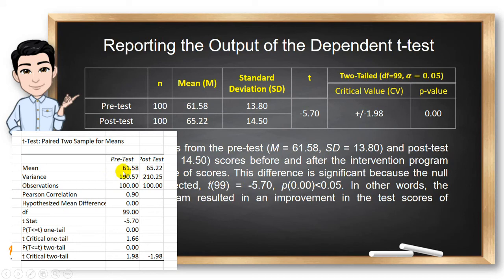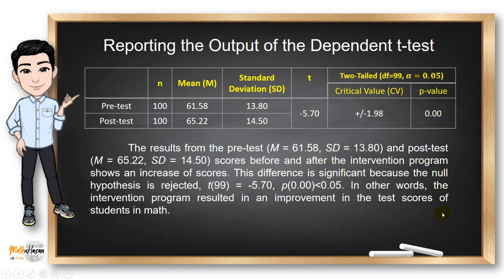The square root of 190.57 is just 13.8 and the square root of 210.25 is 14.5. Now, I place the test value negative 5.7 here and the type of test which is two-tailed. Our critical values are positive and negative 1.98 and the p-value is here.